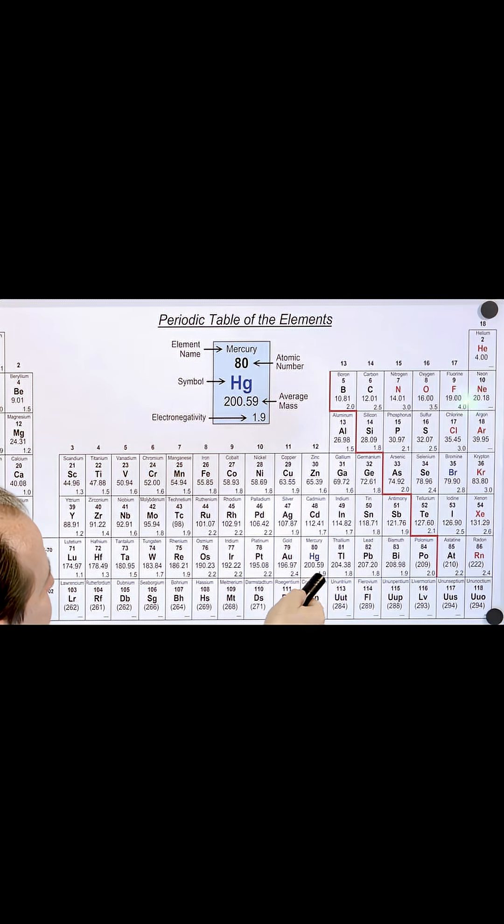Fluorine likes to gain one electron. Basically you read the table, this is how many electrons each atom likes to gain. Nitrogen in general likes to gain three electrons to look like neon.